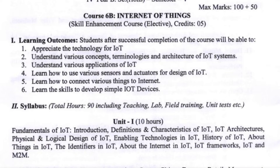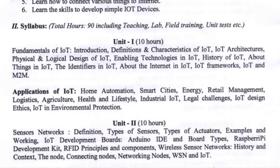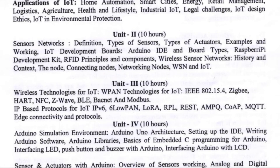For the Internet of Things syllabus: Unit 1 has 2 concepts — the first is Fundamentals of IoT, and the second is Applications of IoT. Unit 2 covers Sensors and Networks, and Unit 3 covers Wireless Technologies for IoT.